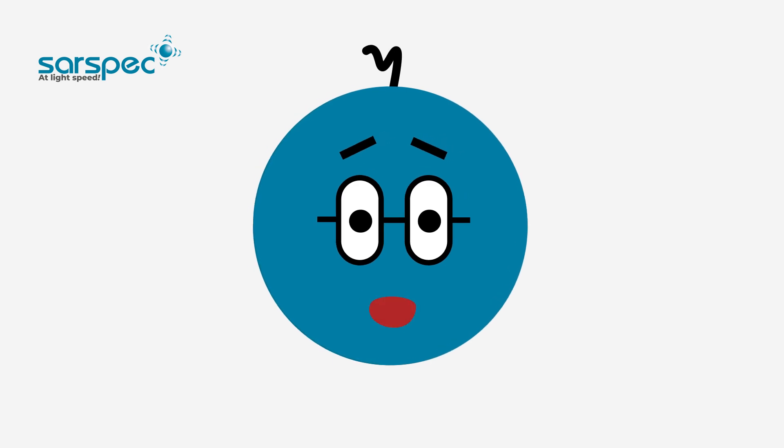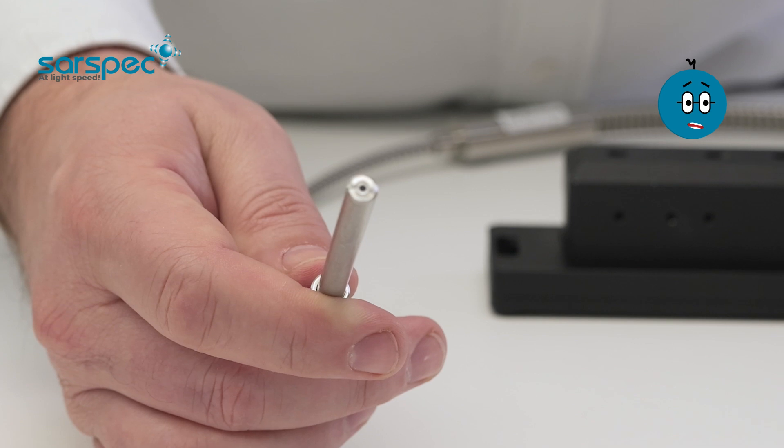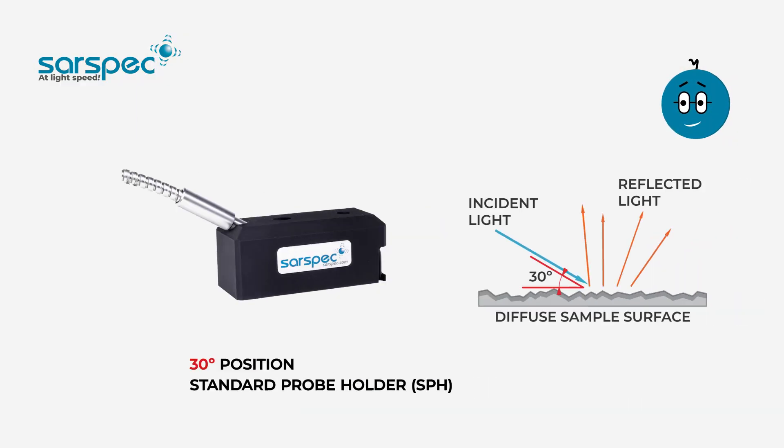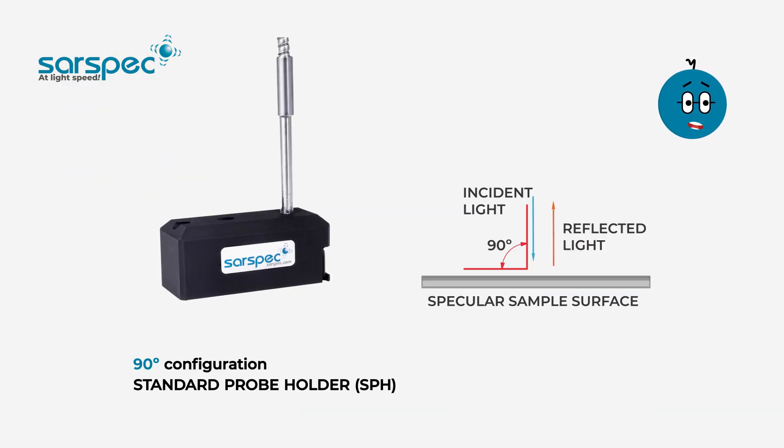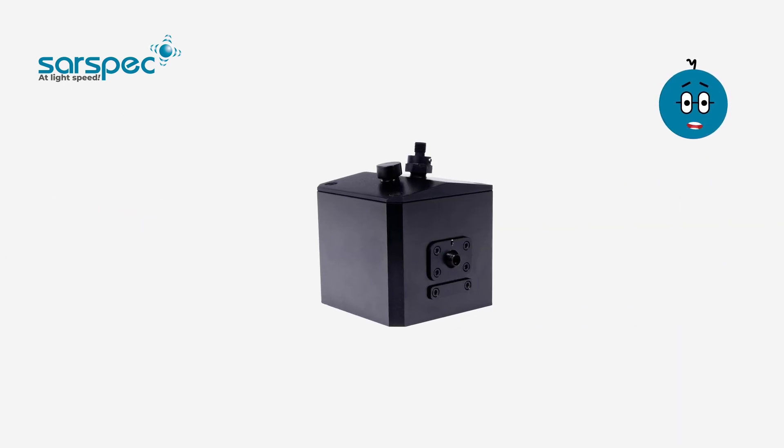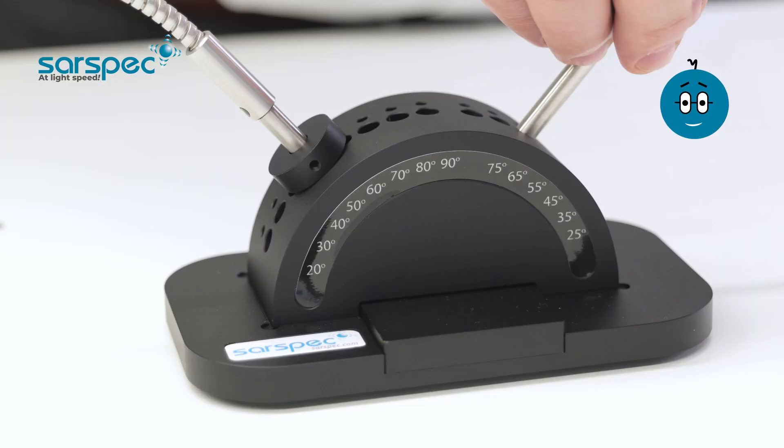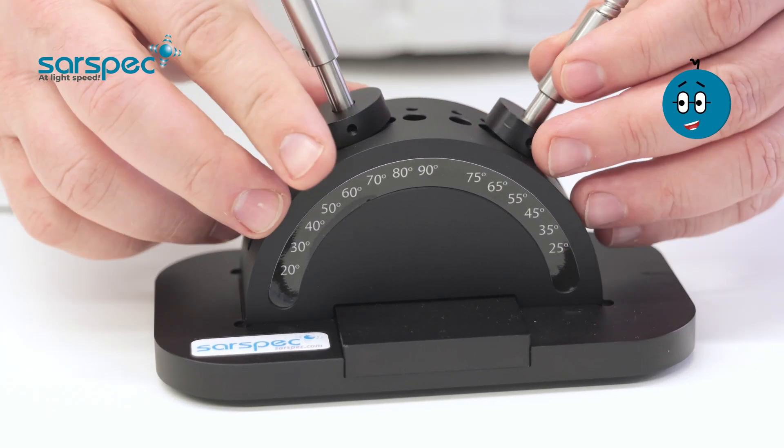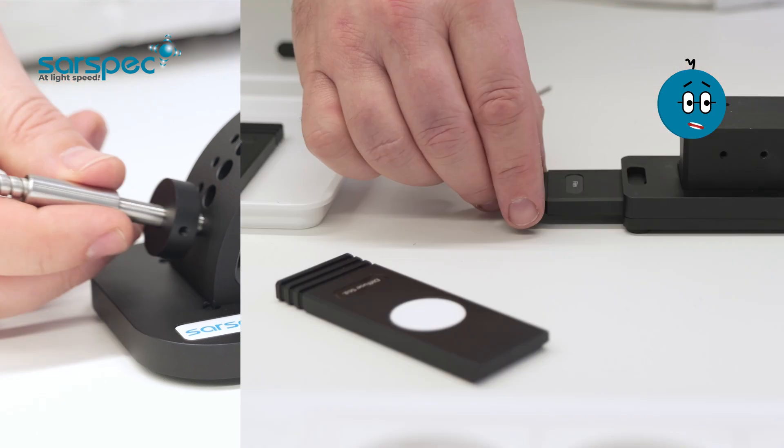We also have a wide range of sampling accessories where you can use reflectance probes to measure rough samples in a diffuse configuration or mirror-like samples in a specular mode. Integrating spheres in case you want to have a larger sampling area, and a super flexible solution where you can choose the angles of irradiation and light collection.